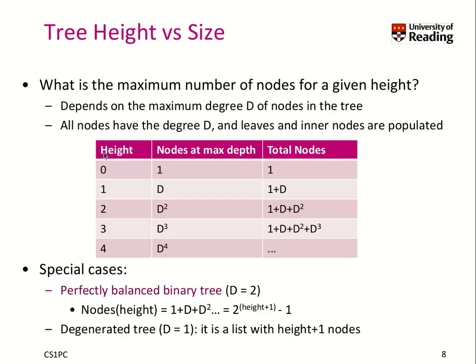Let's have a look at how many nodes we can store for a given height. If the height is 0, we have only the root node. So the maximum number of nodes at this level is 1, and the total nodes for all levels is 1 as well.